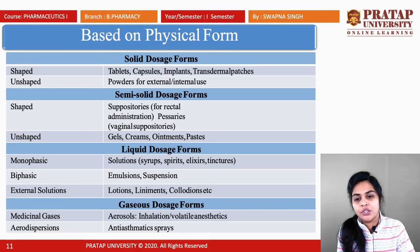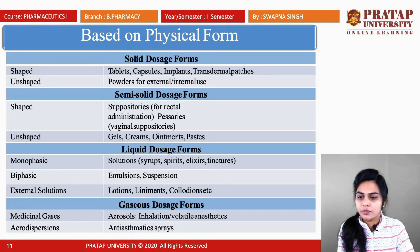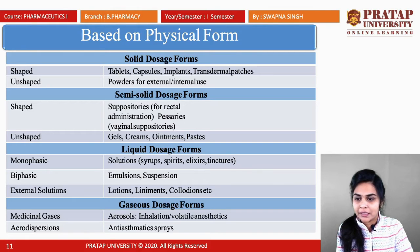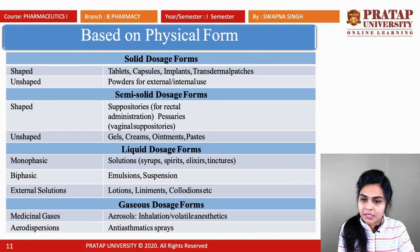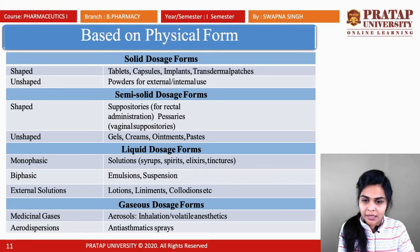The last class is gaseous dosage forms, which have two categories: medicinal gases and aerodispersions. Medicinal gases include aerosols for inhalation, and volatile anesthetics.